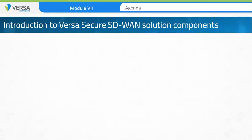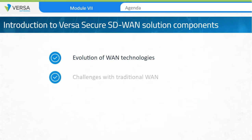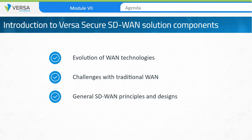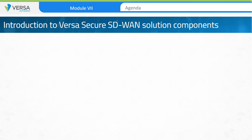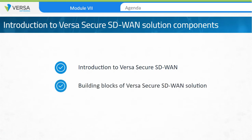Welcome to Module 7 of the Versa Essentials Series. In the first few modules, we discussed how WAN technology has evolved over time and the way organizations have consumed WAN technology. We discussed challenges with traditional WAN and touched upon general SD-WAN principles and design guidelines that have helped address these challenges. In this module, we'll discuss one of the most versatile, secure SD-WAN products available in the market. We'll discuss the basic building blocks of the Versa SD-WAN solution and look at various components of the solution that are combined to deliver the best design, performance, and visibility for your network operations.